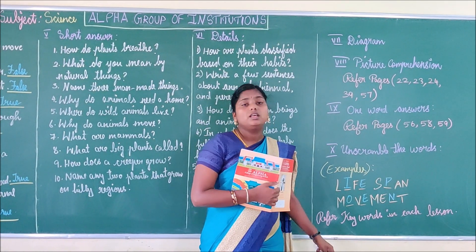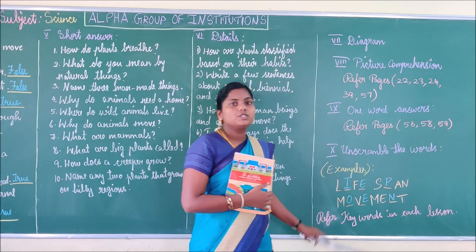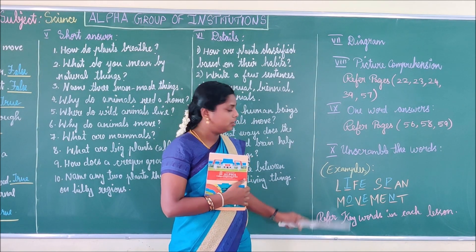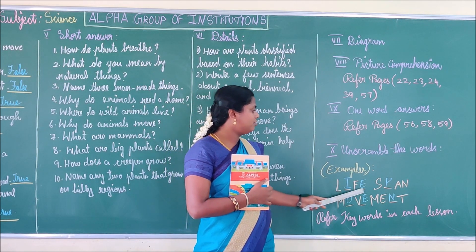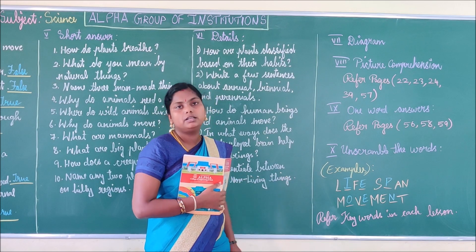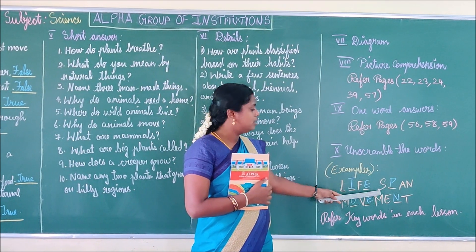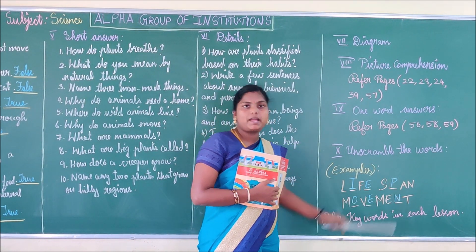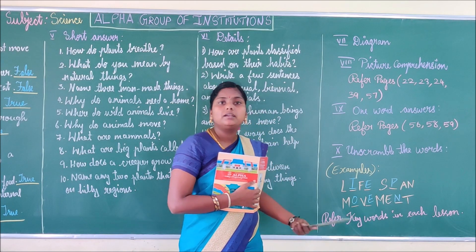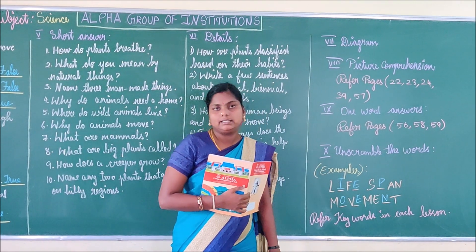Last part — Unscramble the Words. Letters will be given to you in scrambled form and you have to find what word they make. For example, letters L-I-F-E make 'life'; letters S-P-A-N make 'span'; letters M-O-V-E-M-E-N-T make 'movement'.